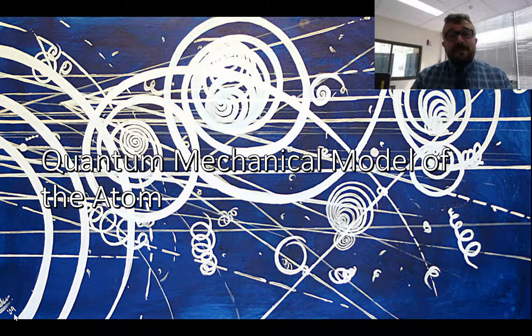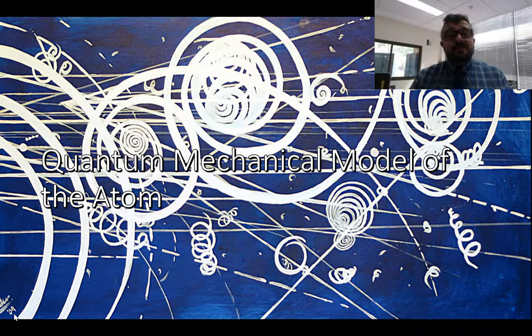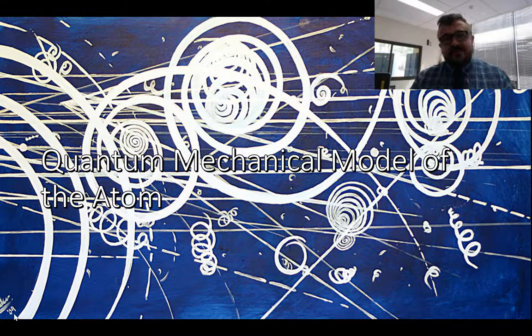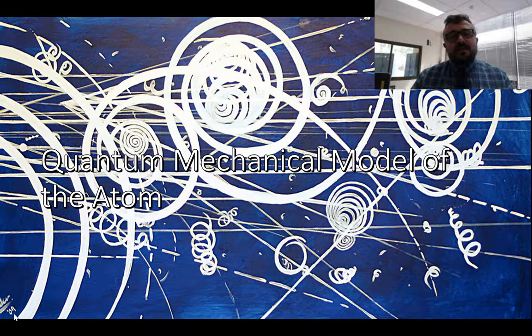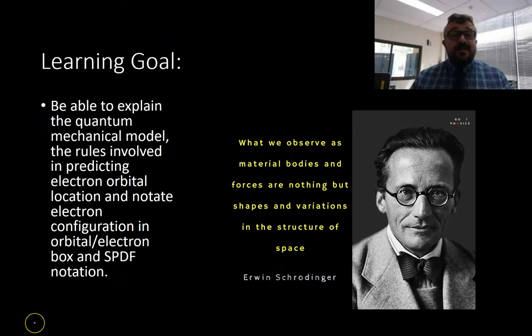G'day nerds. So today we're going to talk about the quantum mechanical model of the atom, or Schrodinger's model. This is the model that he built, along with others, to refine Bohr's work, not replace it. By the end of this, you should be able to explain the quantum mechanical model of the atom and how the different orbitals fit together, predict the SPDF notation and electron orbital box notation of an atom, and predict where electrons are most likely to be.